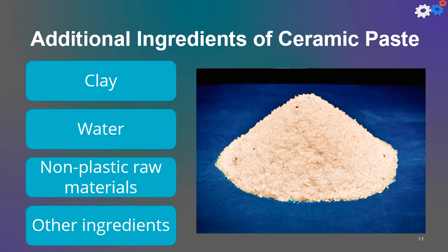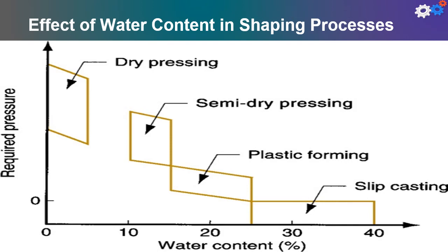Other ingredients may be added, such as fluxes that melt during firing and promote sintering, as well as wetting agents to improve the mixing of ingredients. The water content will affect the shaping process and process selection, which will be covered in the next section.